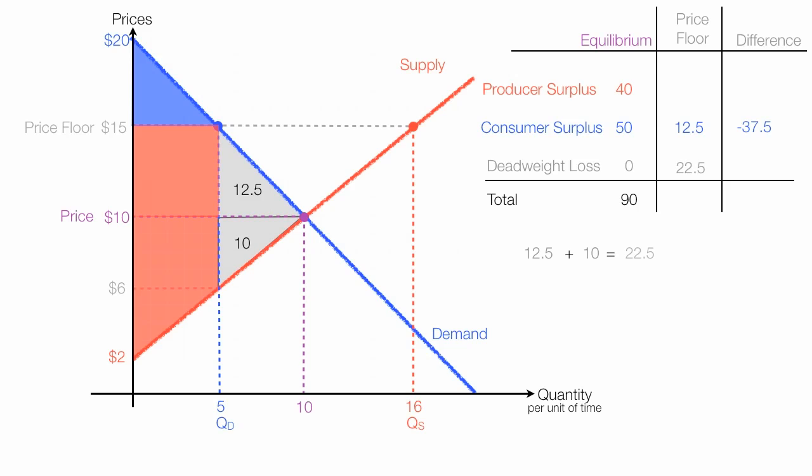Deadweight loss increases to 22.5 after a price floor. To calculate producer surplus, which is this area here, let me draw that first. I can actually take 90, since I know this whole column adds up to 90. I can take 90 and subtract consumer surplus, which is 12.5, and then the deadweight loss, which is 22.5. And this gives me producer surplus, which is 55. So with this price floor, producer surplus increases by 15.